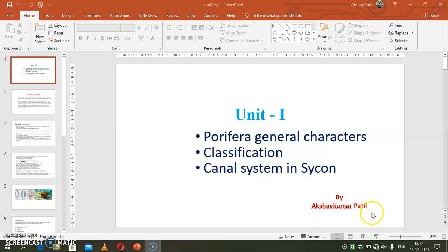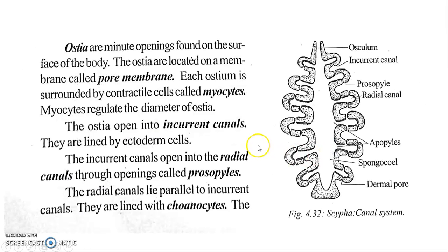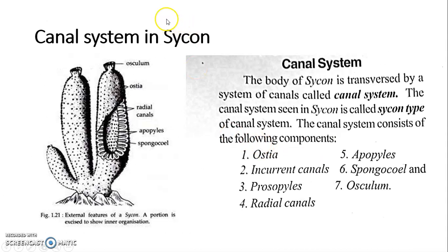This is the canal system in Sycon. This is a diagram of Sycon. Sycon has the Dermal Ostea — these are the small pores present on the outer surface. The larger opening is the Osculum. Through these Ostea, water can enter into the organism. Then water exits through this Osculum, which is a large opening.